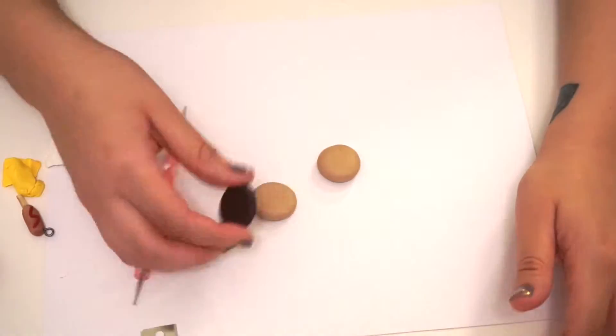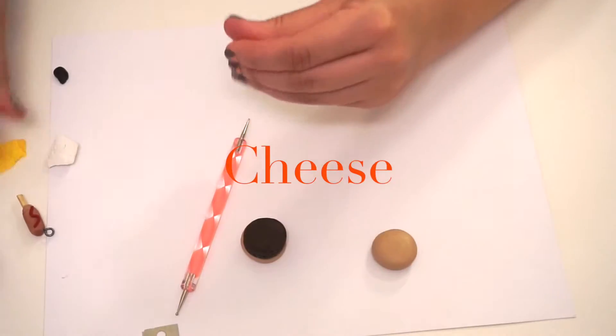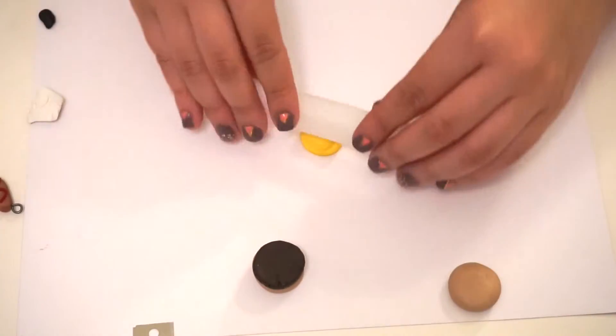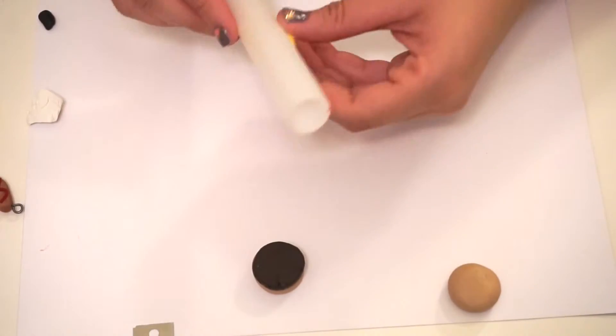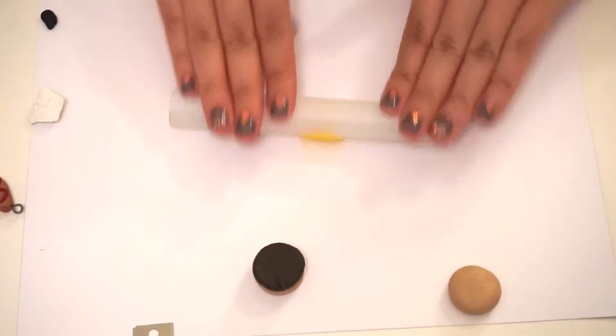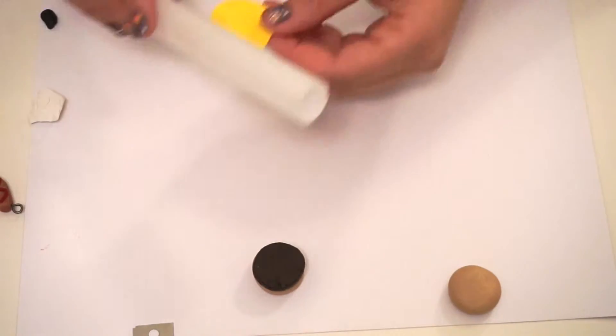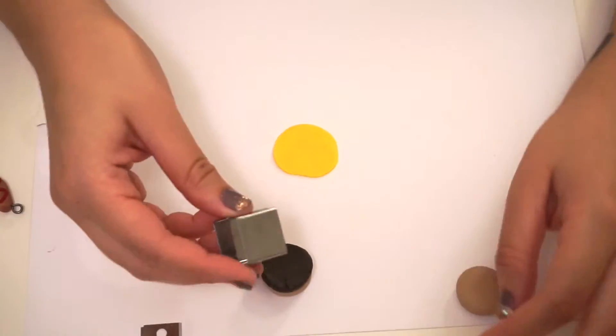And now you're going to go to the cheese. You're going to do the same thing, just roll it out into a ball and then flatten it out with a little rolling pin. I'm going to use a square clay cutter, but you can also just cut this into a square if you'd like. I just feel like the clay cutter happens to be a good size and makes it a little bit easier.